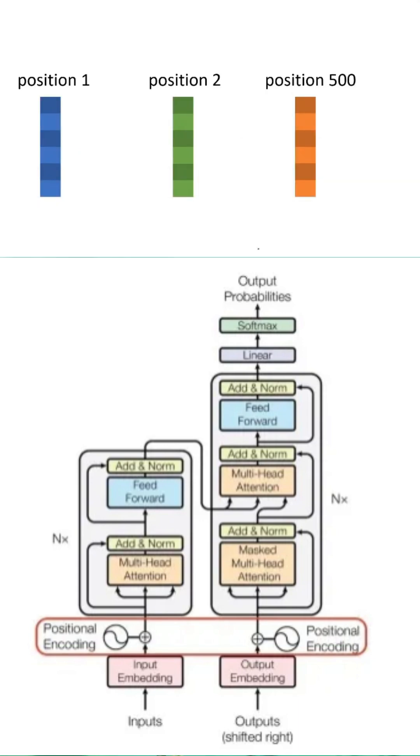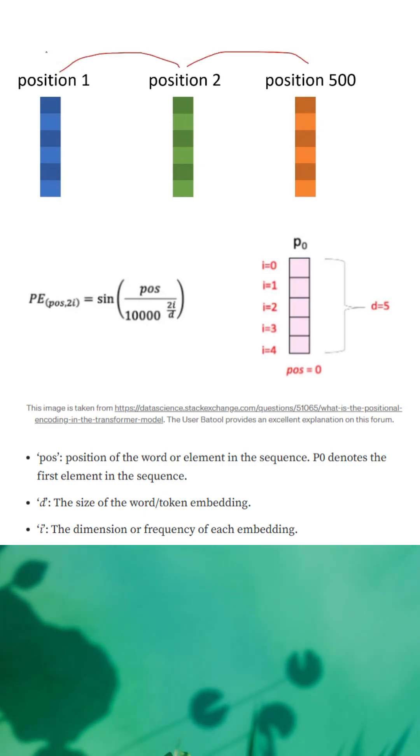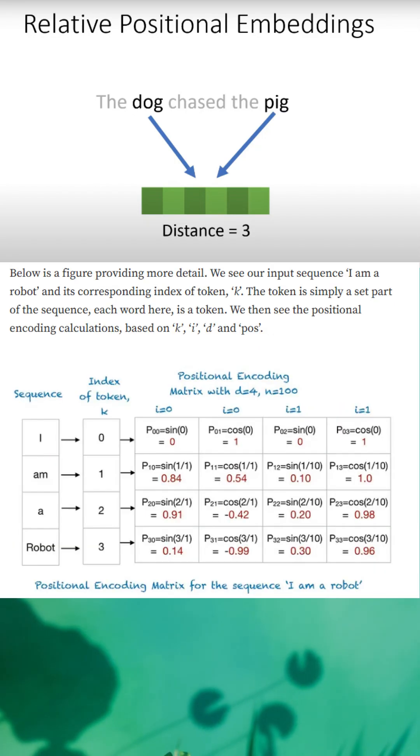A problem with absolute positioning embedding is they do not have individualization between positions. The current solution is memory-intensive, which is relative positional embeddings.